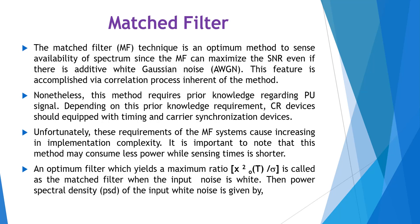An optimum filter which yields a maximum ratio x_o²(t) divided by sigma is called a match filter when the input noise is white. The power spectral density (PSD) of the input white noise is given by SNI(f) = N0 divided by 2.